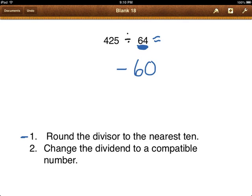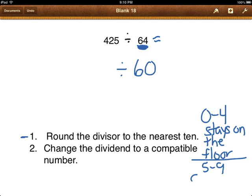I know that 64 is closest to 60. And how do I know that? If you remember, 0 to 4 stays on the floor, and 5 to 9 climbs up the vine. So because this is a 4, it makes the 6 stay on the floor and becomes 60.